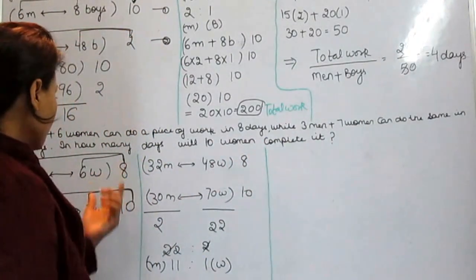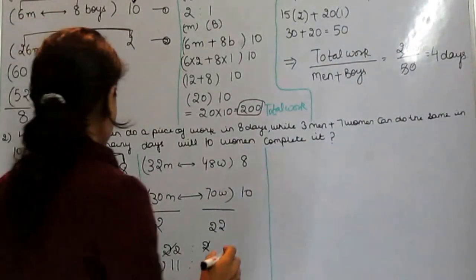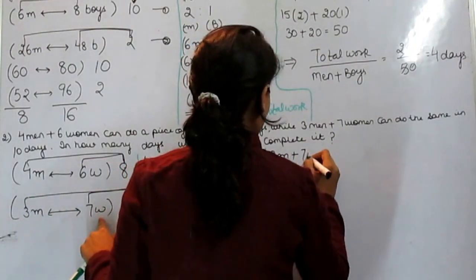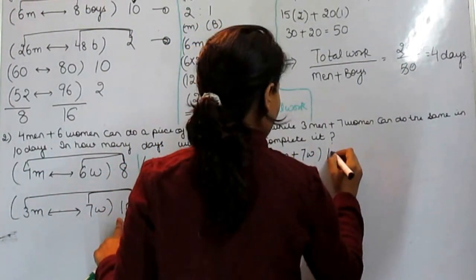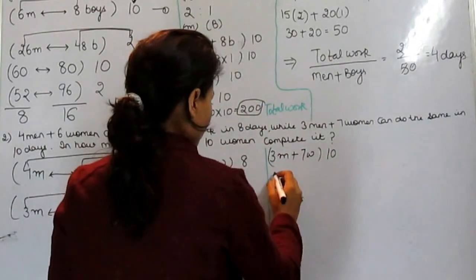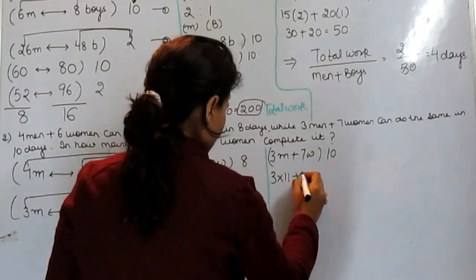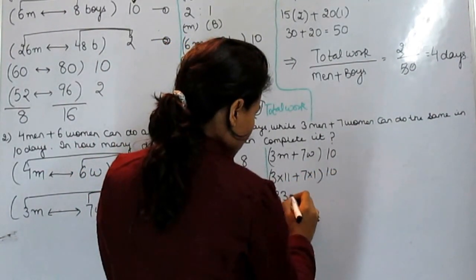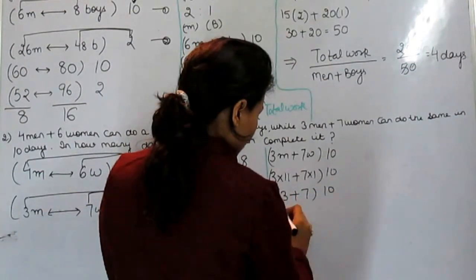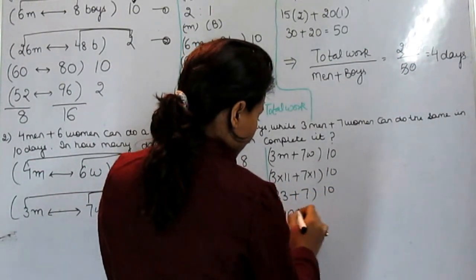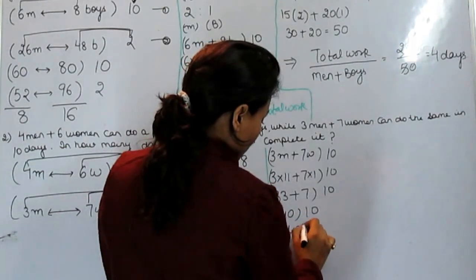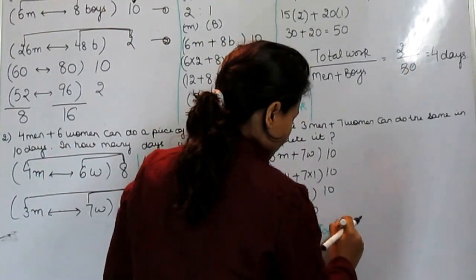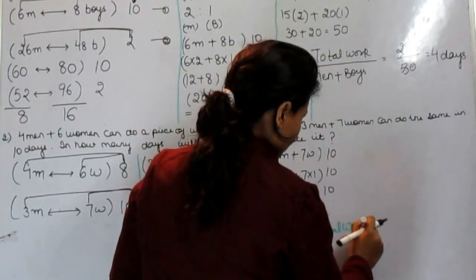Now put this ratio in any of the equation. Let's put in second equation. What is the second equation? 3 men plus 7 women can do a piece of work in 10 days. 3 into 11 plus 7 into 1, this is 10. This is 33 plus 7, this is 10. This is 40 and this is 10. What is the total work? Total work is 400.